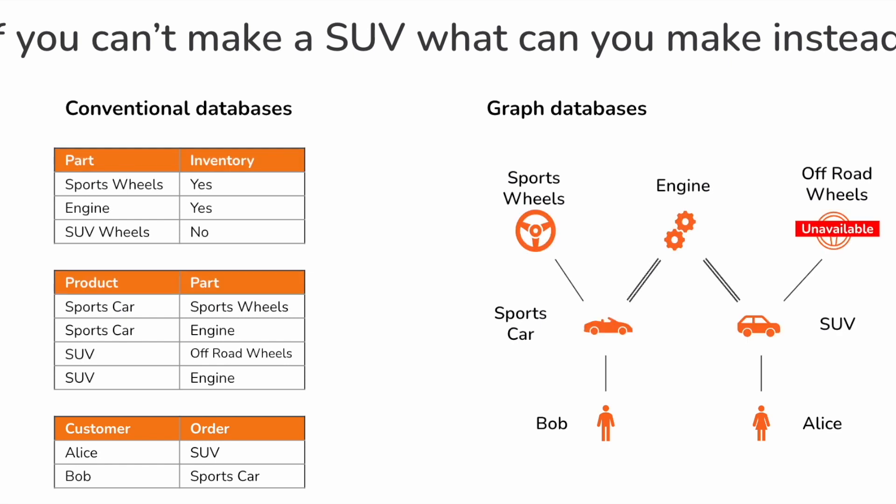Unfortunately, one critical part of the SUV is unavailable: the off-road wheels. This means that Alice's order cannot be fulfilled. But you've already bought a whole load of parts to make that SUV. So here's the question: what can you build instead that uses the parts you've already got, requires as few additional parts as possible, and for which you already have an order so you can sell it straight away? Rescheduling a production line is not an easy problem.